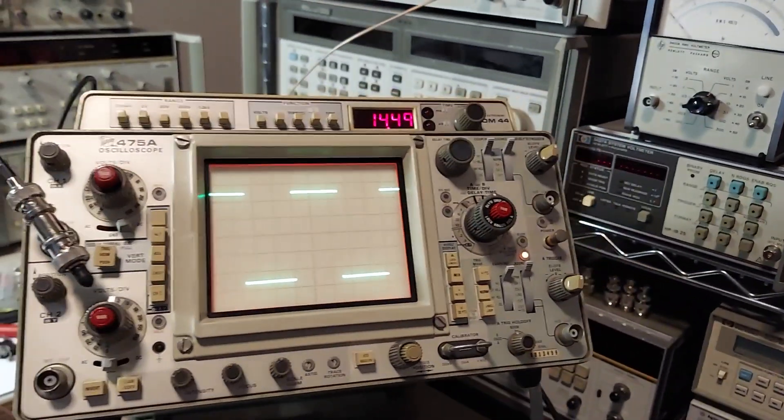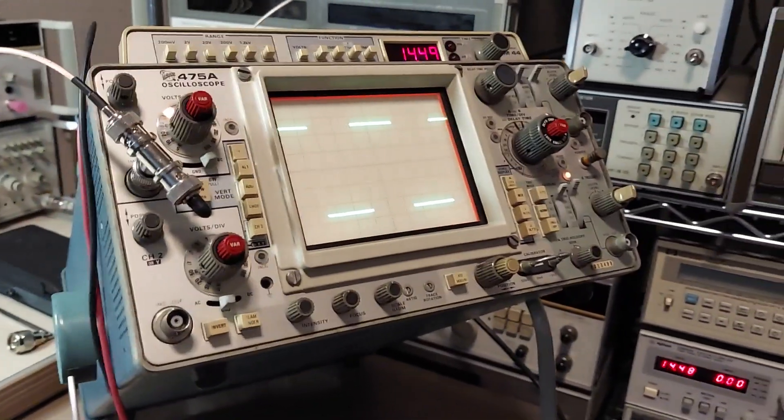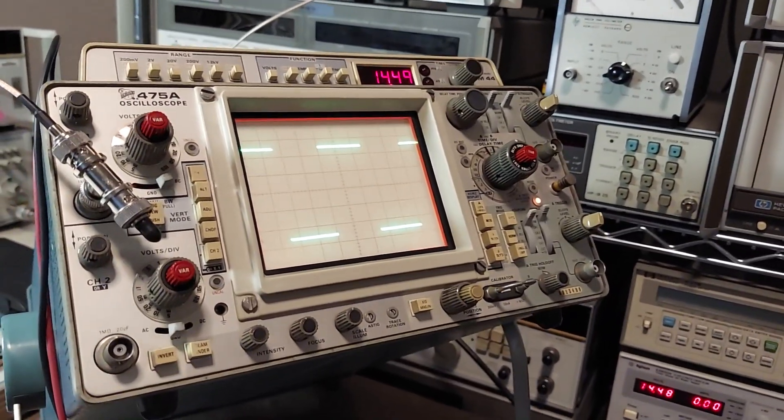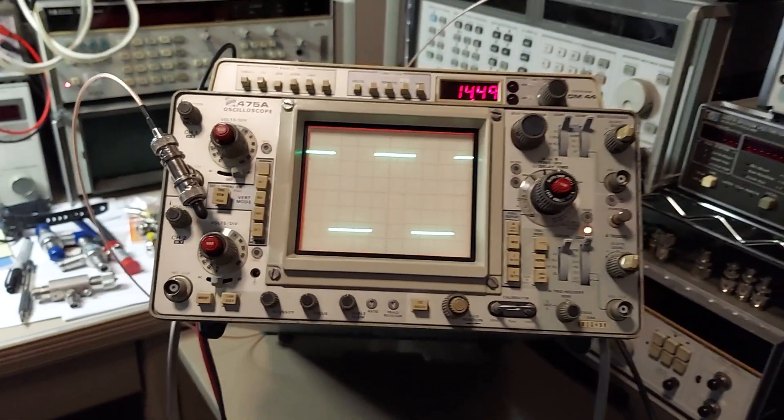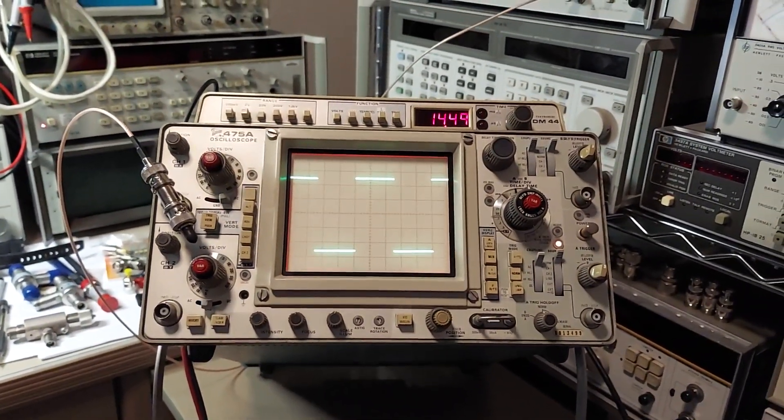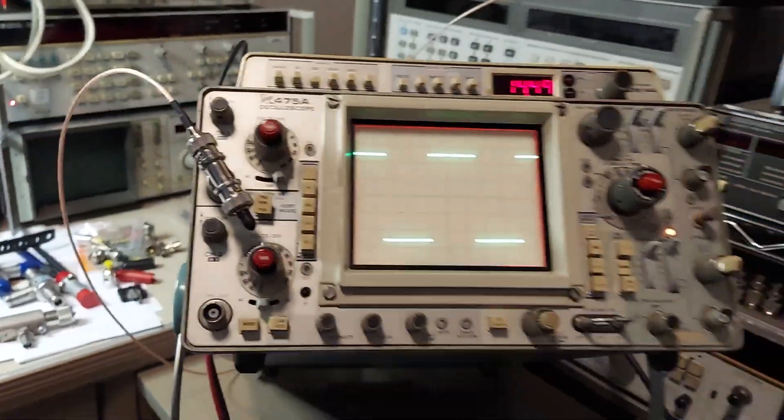Well, here we are just about a week later. This is my $25 Tektronix 475A. It was a ham fest special, so I bought the thing mostly just for the probes.